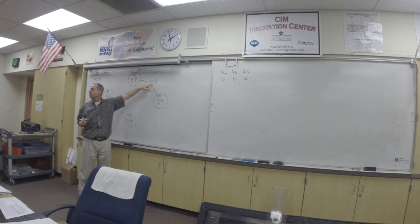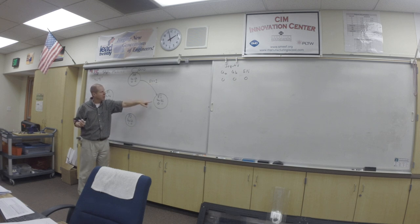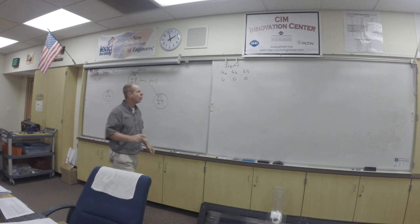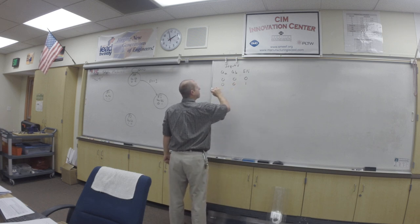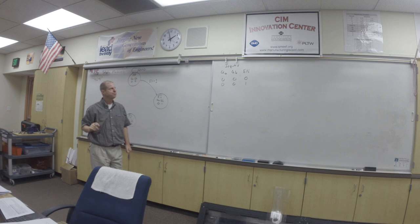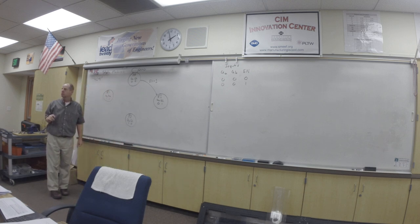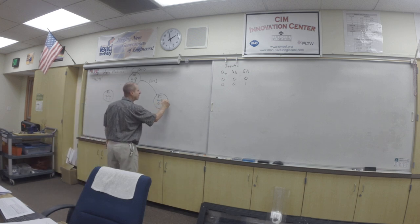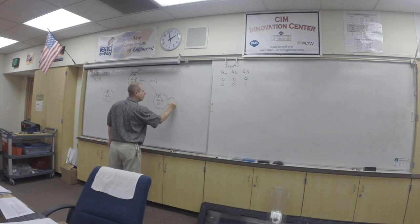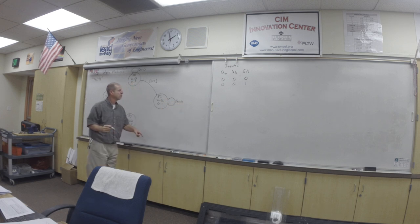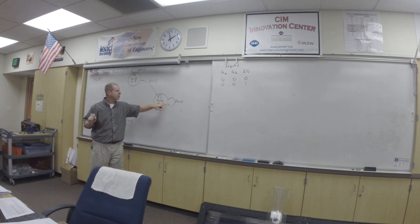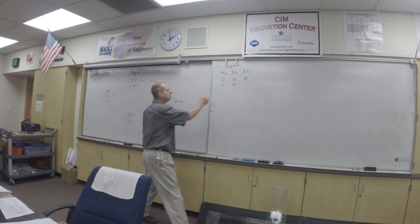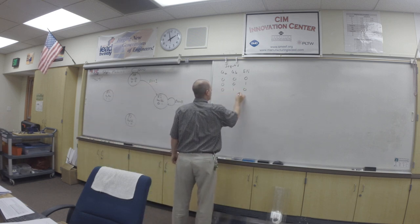Now we're going to put a coin in. Clicking the enable switch to one enables us to transition to state number one, which means our next input is going to be zero-zero-one. Now, when it's in this state and the enable is equal to zero, it's locked again. Pushing on that thing isn't going to move it, so all day it's going to be zero. So now it's zero-one-zero.